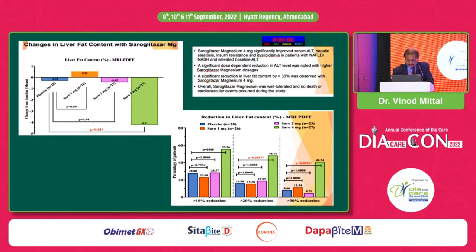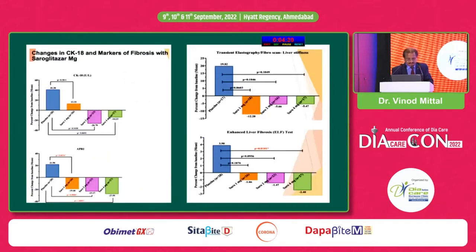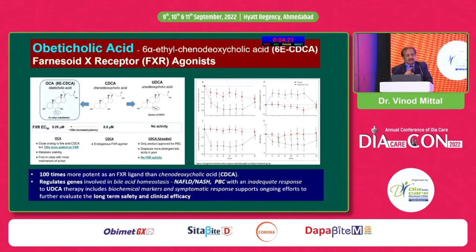Saroglitazar decreases triglycerides, total cholesterol, and LDL, while increasing HDL. It is a dual alpha and gamma PPAR agonist, so it not only controls lipids but also improves insulin sensitivity like pioglitazone. It has a dual action: control on hyperglycemia as well as lipid lowering. Saroglitazar was also found to decrease CK-18, a marker of fibrosis.